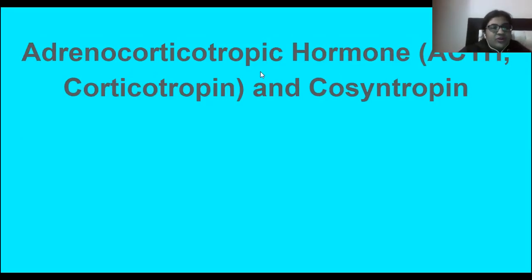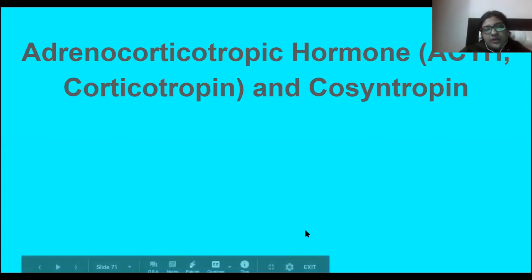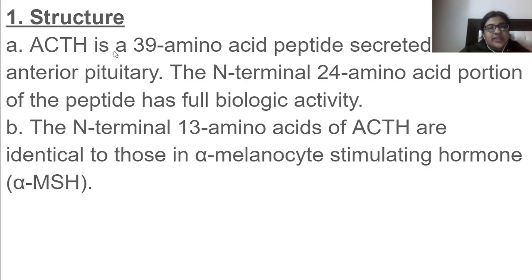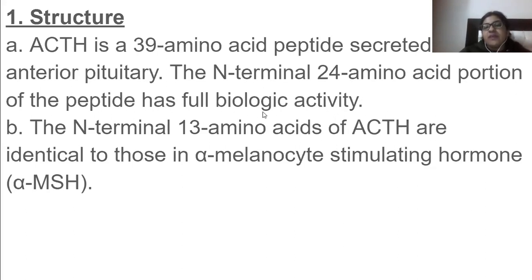Next is adrenocorticotropic hormone, also called corticotropin and cosyntropin. The structure: ACTH is a 39 amino acid peptide secreted from the anterior pituitary. The N-terminal 24 amino acid portion of the peptide has full biological activity. The N-terminal 13 amino acids of ACTH are identical to those in alpha-melanocyte stimulating hormone.